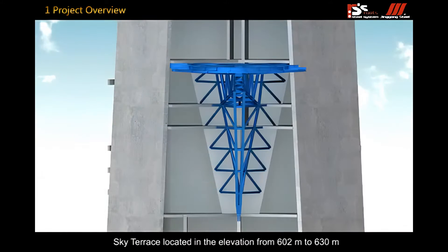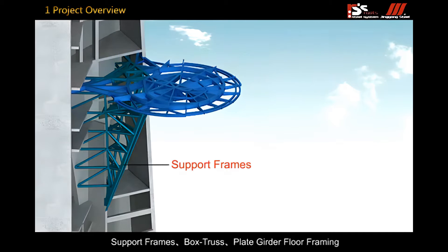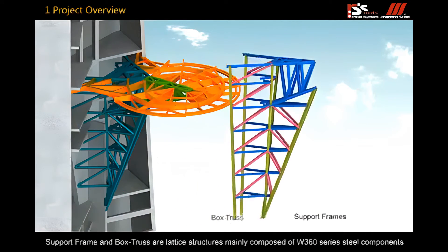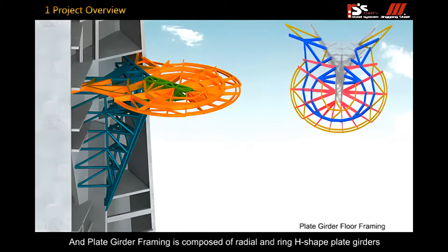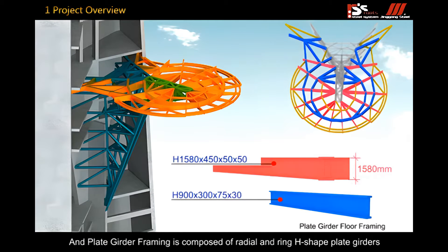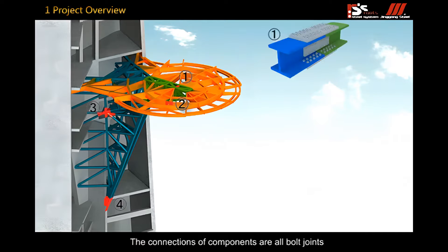Sky terrace is located in elevation from 602 meters to 630 meters with a 33 meters cantilever distance. It includes three parts: support frames, box truss and plate girder framing. Support frame and box truss are lattice structures mainly composed of W360 series dual components and plate girder framing is composed of radial and ring edge-shaped plate girders. The connections of components are of bolted joints.